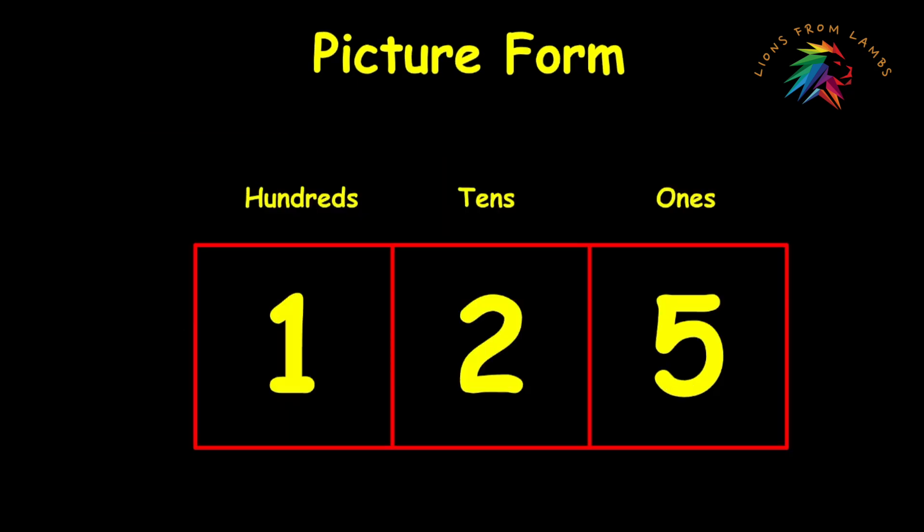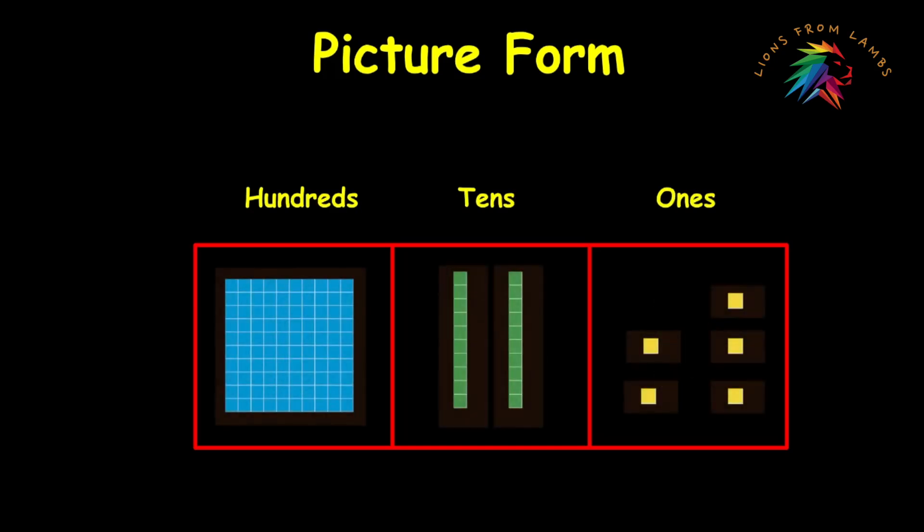So let's look at the number 125 again. And let's look at it first using base 10 blocks. We've seen this in a previous video. So we have five units in the ones place, two rods in the tens place, and one flat, representing the 125.